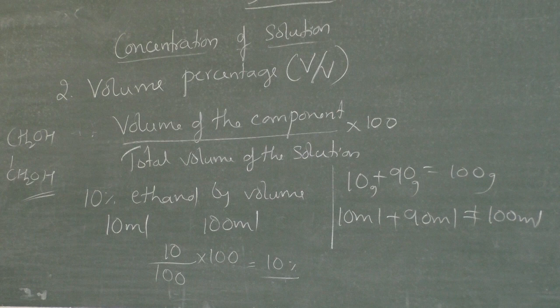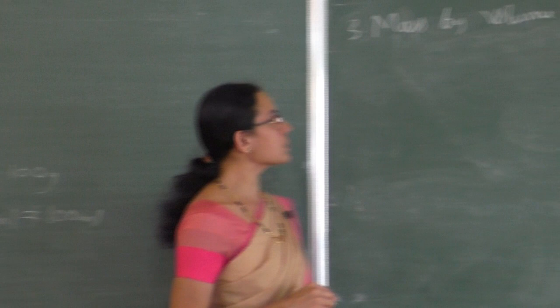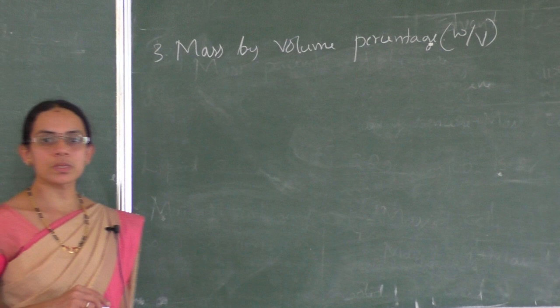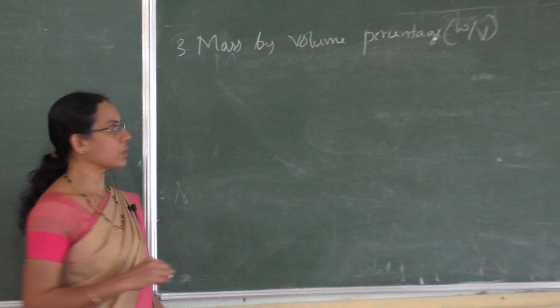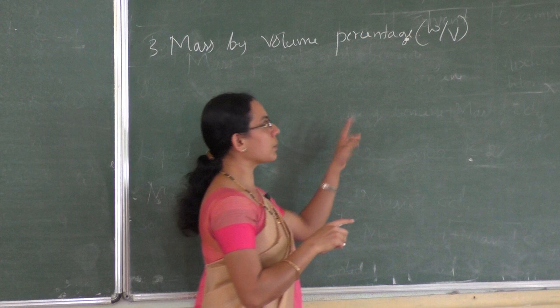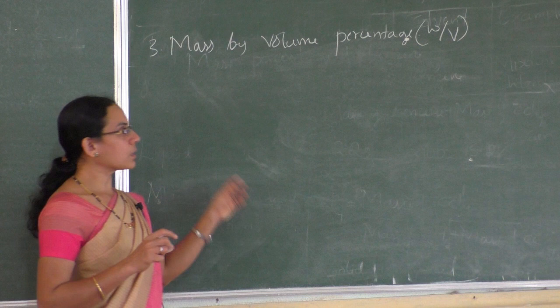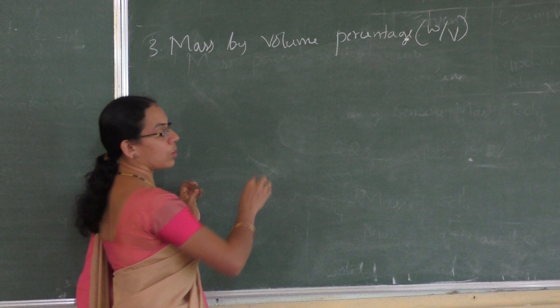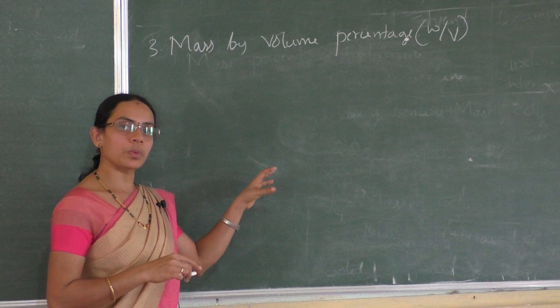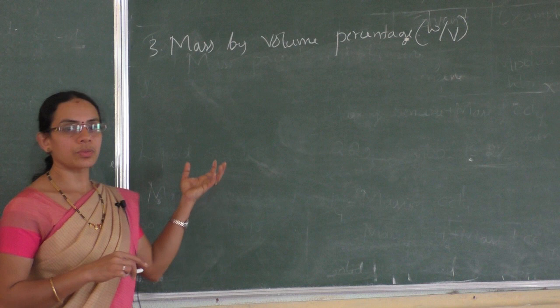The third concentration term is mass by volume percentage. It is simply the amount of solute (in mass) present in 100 mL of solution. This concentration term is used in medicine — you might have observed that medicinal bottles express composition in mass by volume percentage.